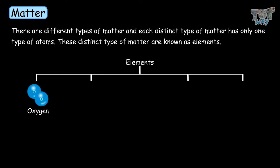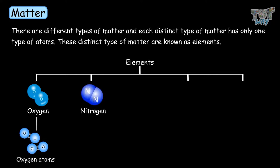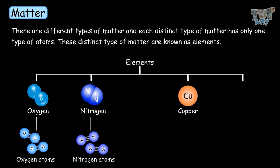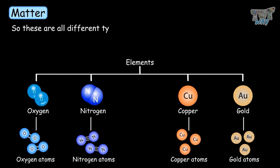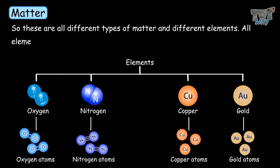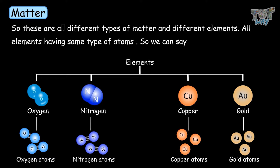For example, oxygen only has oxygen atoms, nitrogen only has nitrogen atoms, copper only has copper atoms, and gold only has gold atoms. So these are all different types of matter and different elements — all elements have the same types of atoms. So we can say the atom is the smallest unit of the element.